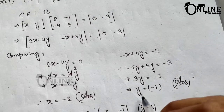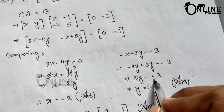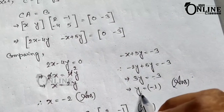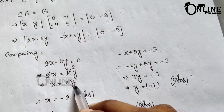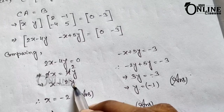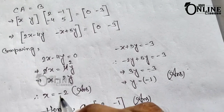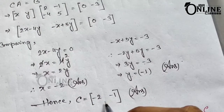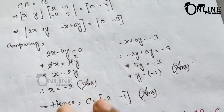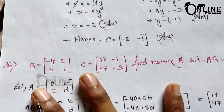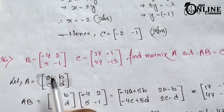From the second element: minus x plus 5y equals minus 3. Substituting x equals 2y gives 3y equals minus 3, so y equals minus 1. Then x equals 2 times minus 1 equals minus 2. Therefore matrix C equals [minus 2, minus 1].